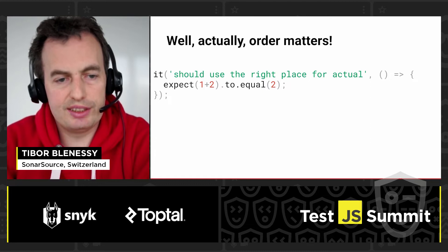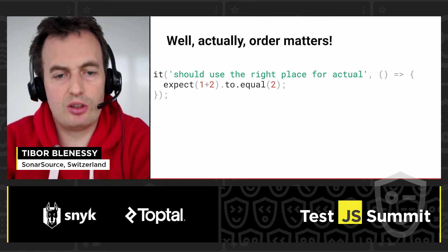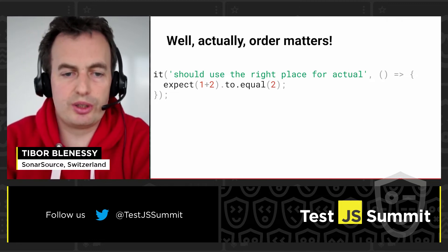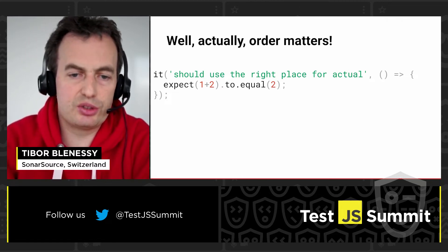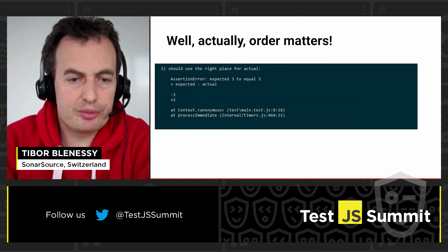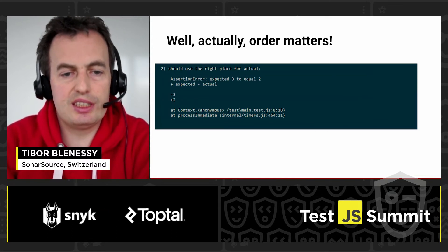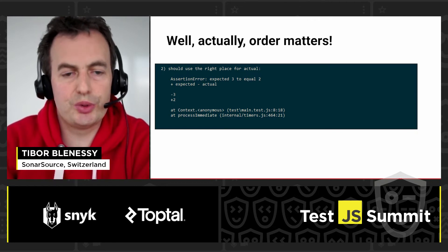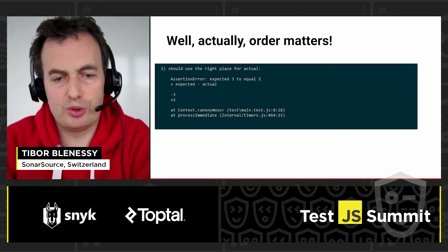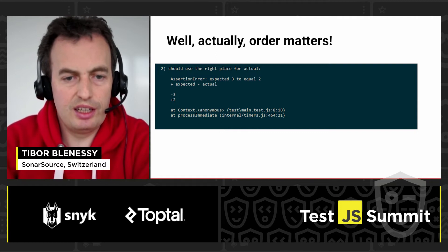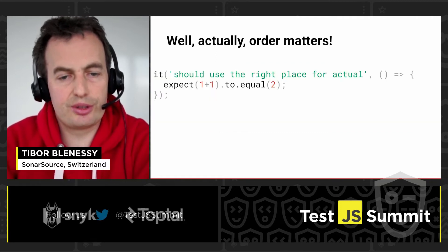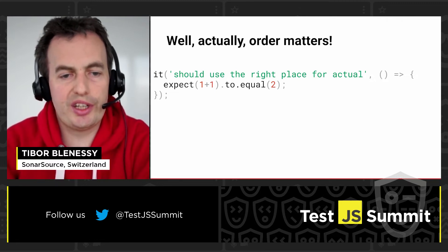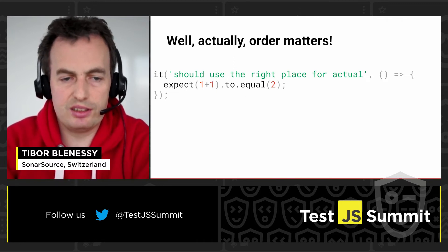Correctly, it should look like this: you should have the addition in the expect call and it should equal to what your expectation is — in this case two — which gives a better message where 'three is expected to equal two.' So the result we computed is three and our expectation was two. Here is the actual correct test where you need to fix your computation to make the test green.